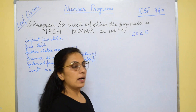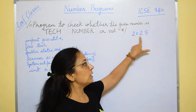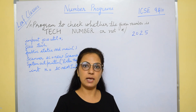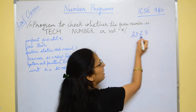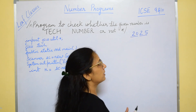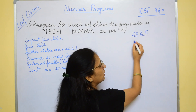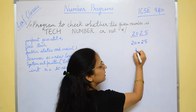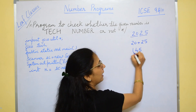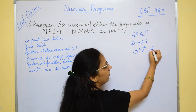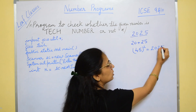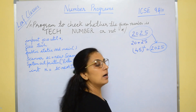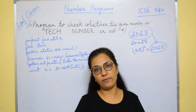Let's take the number 2025. How many digits are there? 1, 2, 3, 4 — total 4 digits, which means an even number of digits. If we divide this number into two halves: 20 and 25, and find the sum of these, that is 45, then find the square of 45, which equals 2025 — which is equal to the original number. So 2025 is a tech number.